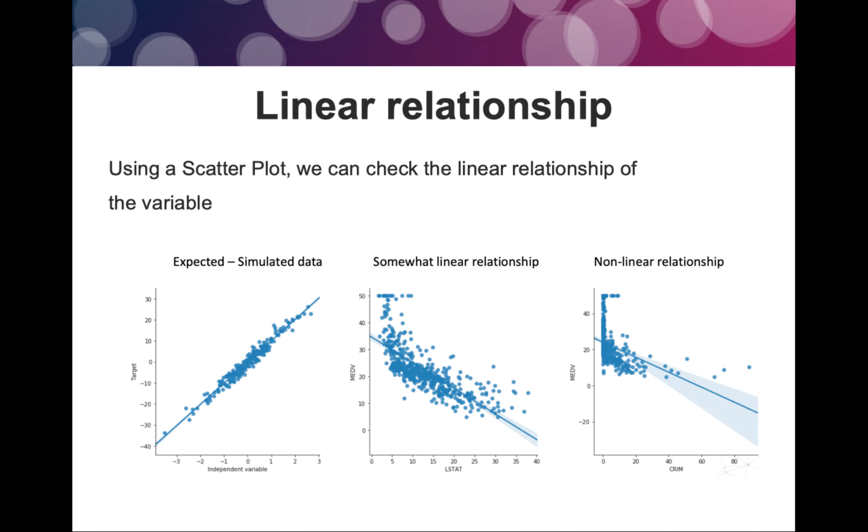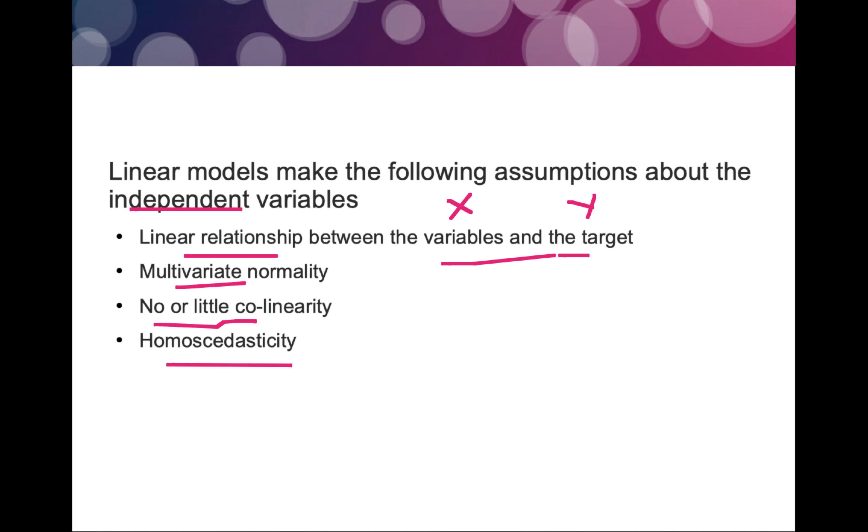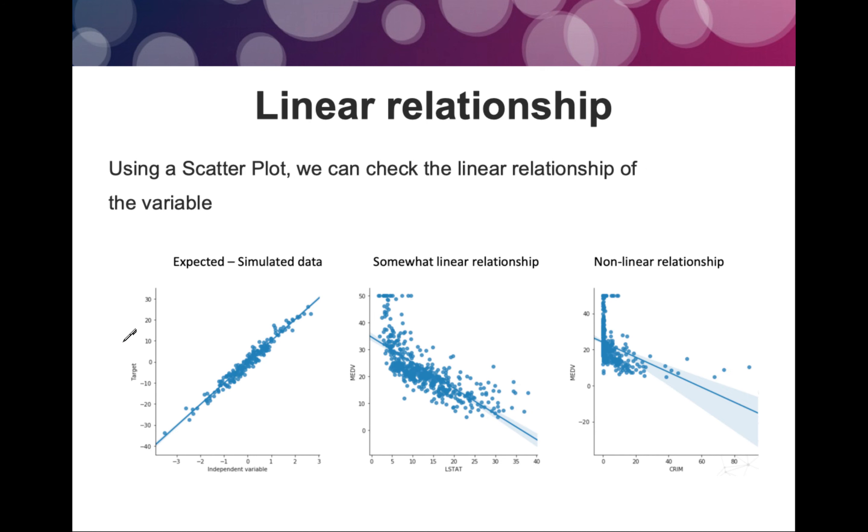Now let's start with linear relationship. We'll get into the depth of every single pointer. Linear relationship can be judged by a simple scatter plot. You can see this is a perfect linear relationship.